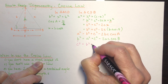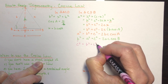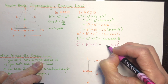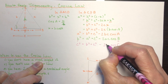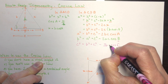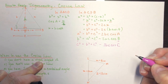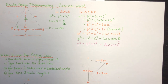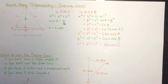Some students have trouble adjusting the formula when the sides aren't labeled a, b, and c — for example when you have PQR, RST, or L and N. We'll look at those as we go through the other examples.